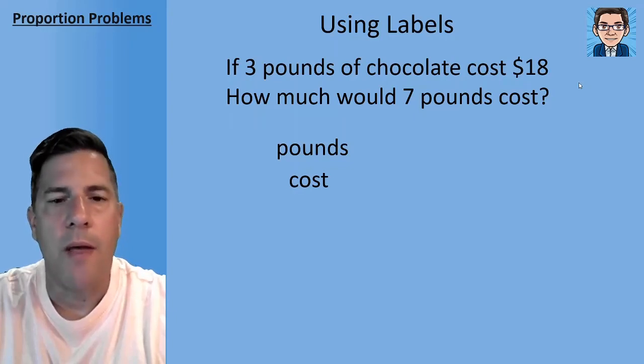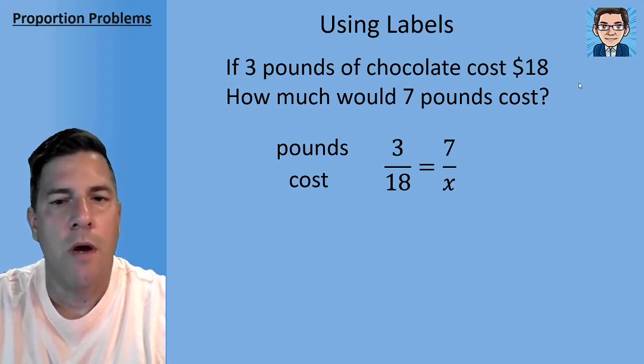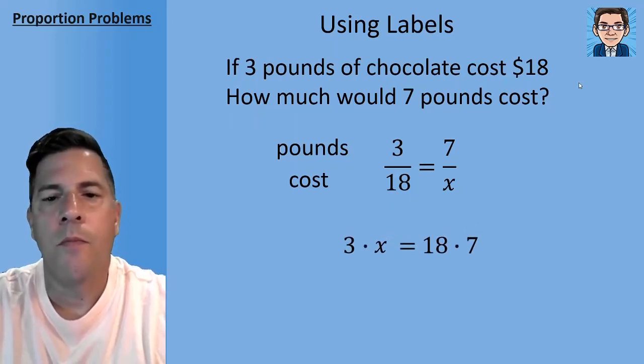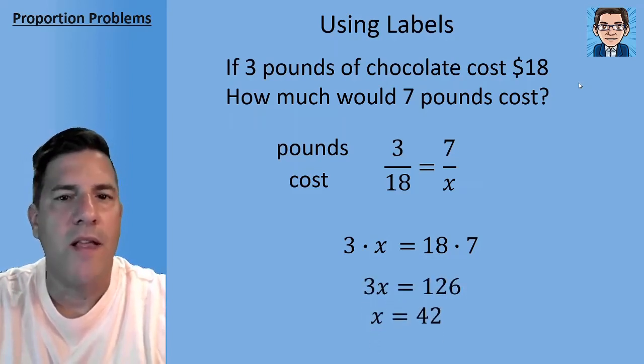I like to write the labels, write out pounds and cost so that when I set up my proportion, I know to put three in the numerator because that's where I'm putting pounds and 18 is my cost so that goes in the denominator. And that's set equal to seven in the numerator because that's how many pounds and we don't know the cost, so that's where our cost is going to go in the denominator. It really helps to write out what you're going to put in the numerator and the denominator so that you don't confuse them and you can keep them consistent. Then from there, we can just cross multiply, 3x equals 18 times 7. So we get 3x equals 126, divide by 3 to get our final answer, and that's going to be 42.